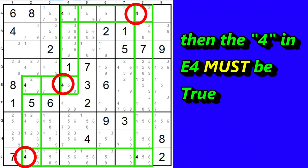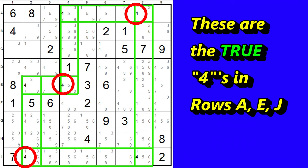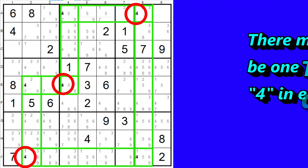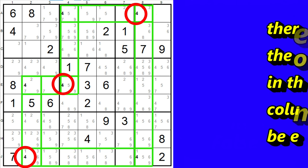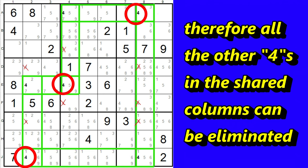Here, you can see all the 4s that can be true in this scenario. We can do this for any of the 4s. There must be one true 4 in each of the rows. Therefore, all the other 4s in the respective columns can be eliminated.